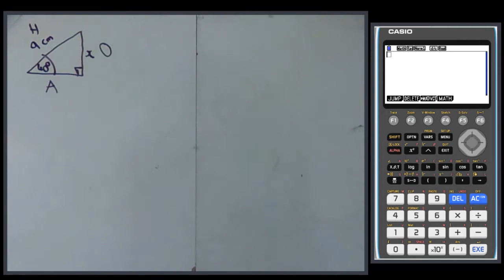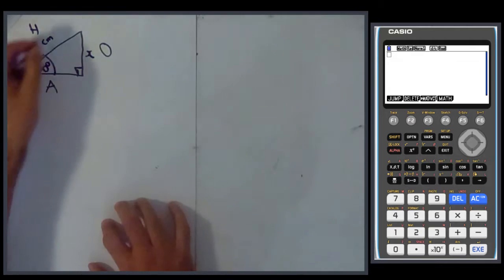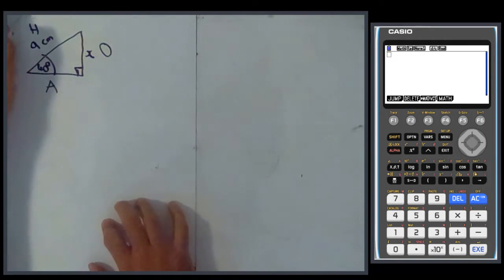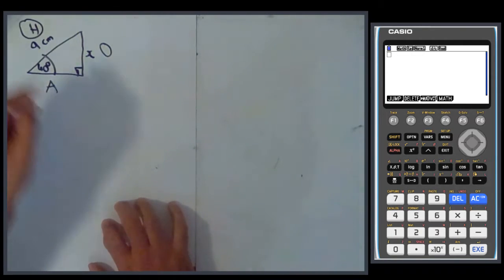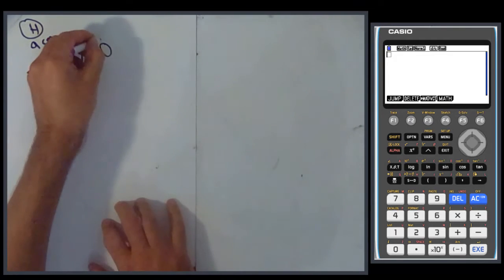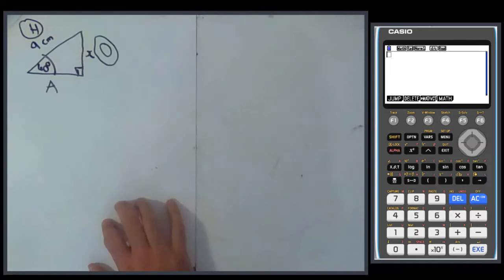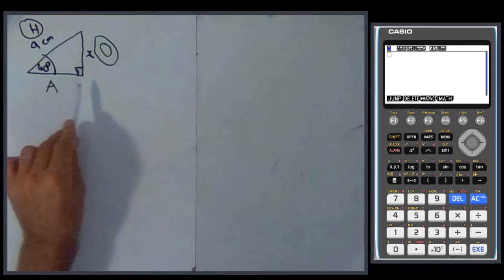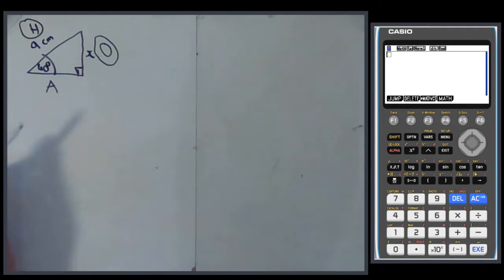Okay, HOA, now we do ring-ring, so we ring the two sides that are involved. So the 9 is involved because it's a piece of information we're going to use, so H is involved. The x is involved because that's the side that we actually want to find, so the O is involved. The A is not involved because we don't know the value of it and we haven't been asked to find it.